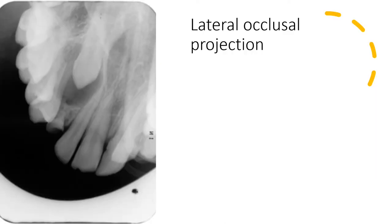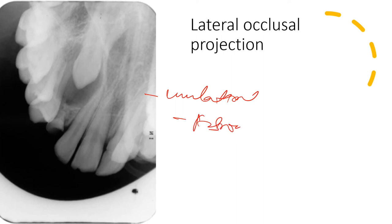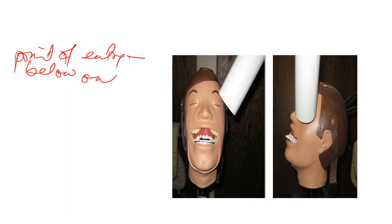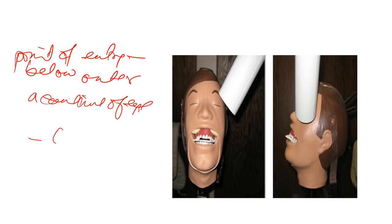The maxillary lateral occlusal projection is used when you need to see unilateral pathology — for example, in fibrous dysplasia where there is unilateral involvement. The point of entry for this projection is below the outer canthus of the eye, directed at 60 degrees.